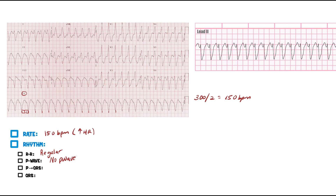When you don't see a P wave, you can also look in V1 for any fibrillatory waves for AFib — I don't see anything there either. Since there's no P wave, there's no association between the atria and the ventricles. The ventricles are beating at their own intrinsic rate, so this is AV dissociation.